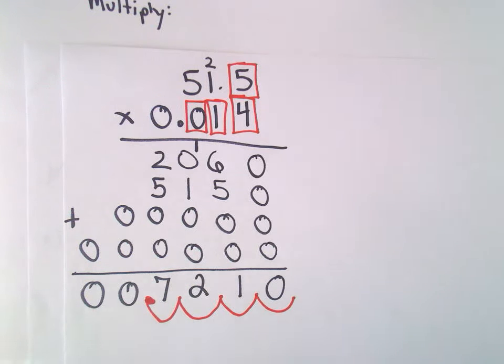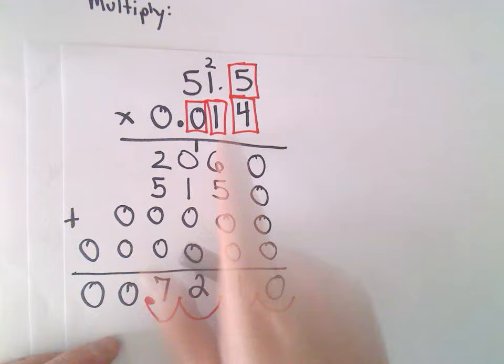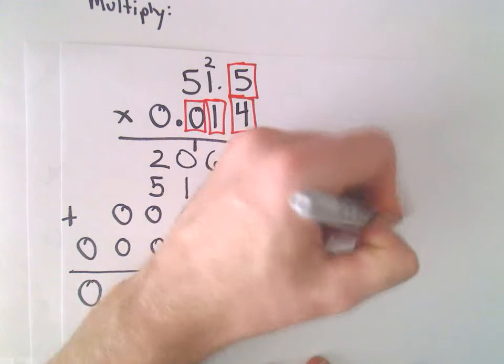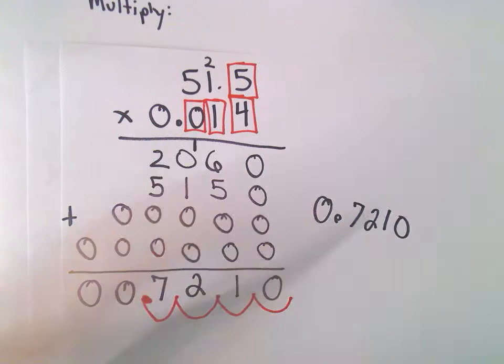So if we multiply 51.5 times 0.014, we'll be left with 0.7210 as our solution.